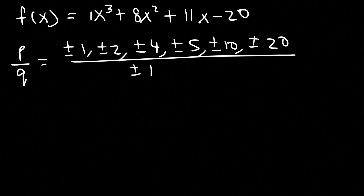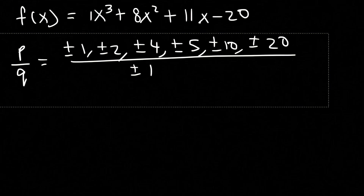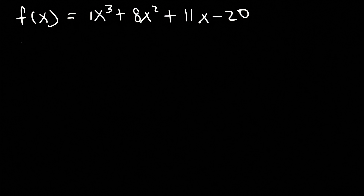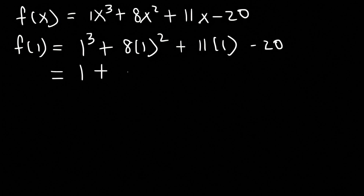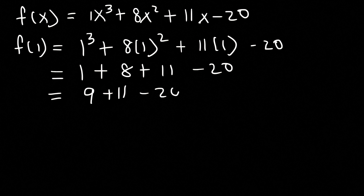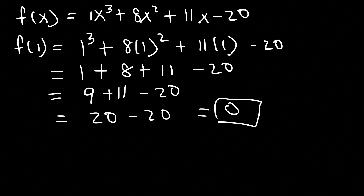Let's start with f(1). f(1) = 1³ + 8(1²) + 11(1) - 20. 1 to the third is 1, 1 squared times 8 is 8, and 11 times 1 is 11. So 1 + 8 = 9, 9 + 11 = 20, and 20 - 20 = 0. So f(1) = 0, which means x = 1 is the first answer.